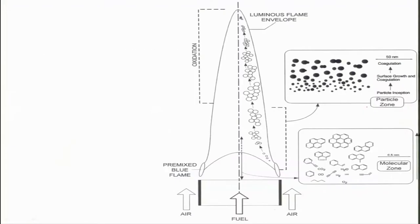Let us now get back to the jet diffusion flame. The molecular zone is where all these processes take place: hydrogenation, cyclization, polymerization, and PAH formation. In a premixed flame nothing happens in this regard, but in the diffusion flame it does. This inner region is basically the molecular zone.